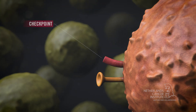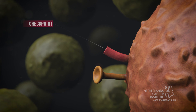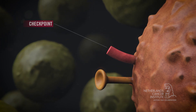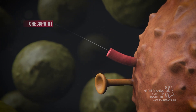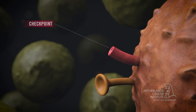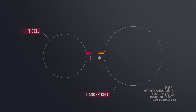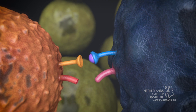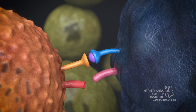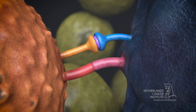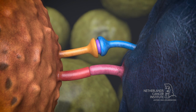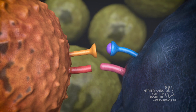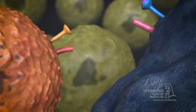In addition to the activating T cell receptors, T cells also have receptors that can restrain their function. These receptors are called checkpoints. When these checkpoints are turned on, the T cell can no longer destroy abnormal cells. Cancer cells sometimes abuse these checkpoints, thereby giving stop signals to the T cells, preventing themselves from being destroyed.